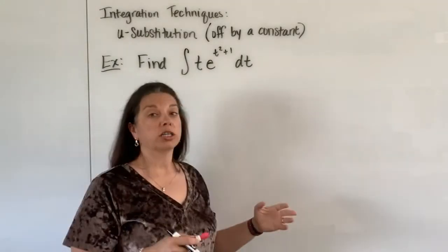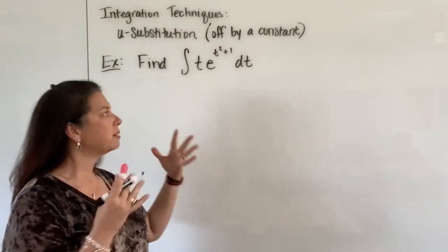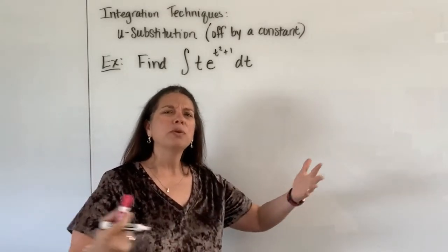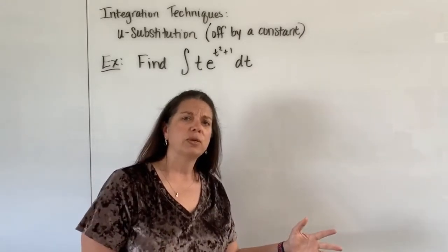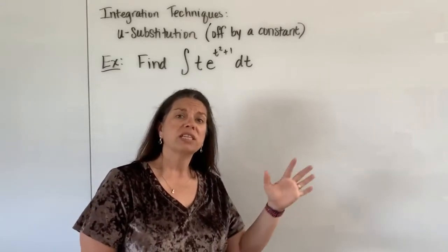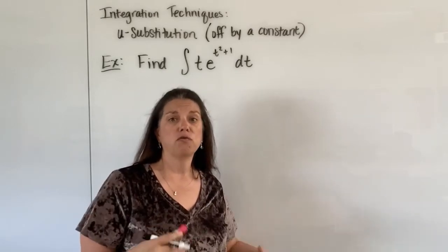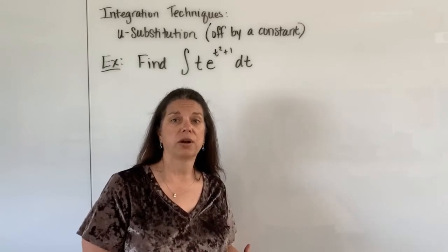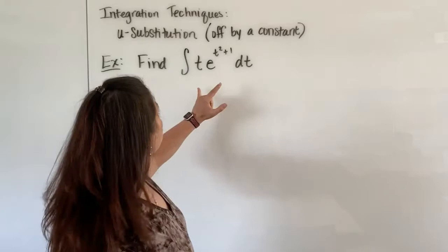But we're going to start this particular problem like we started the other problems, which is trying to make sense of what we're given in the integrand so we can identify what would the best u possibly be. In the last videos we saw that the best u was in fact the inside function for that composition function. So if you can identify what the inside function is here in this integrand then you know what your u should be. Okay so we look very closely here.